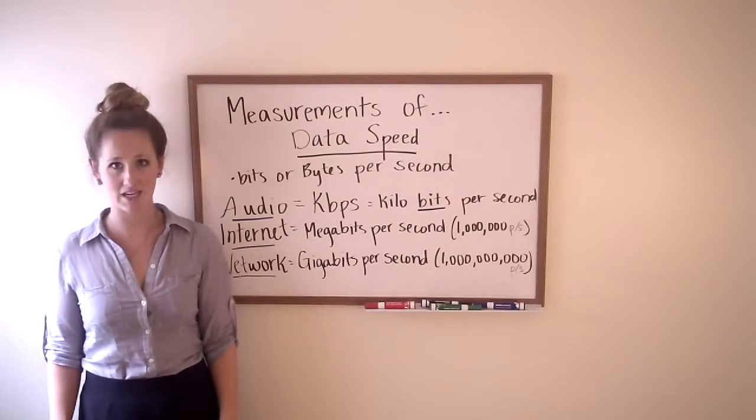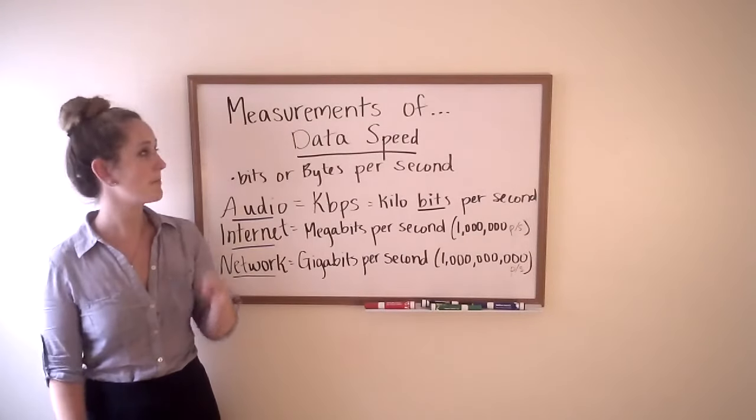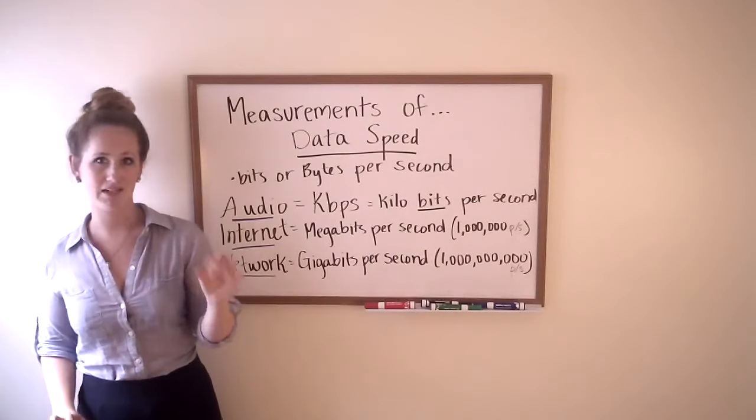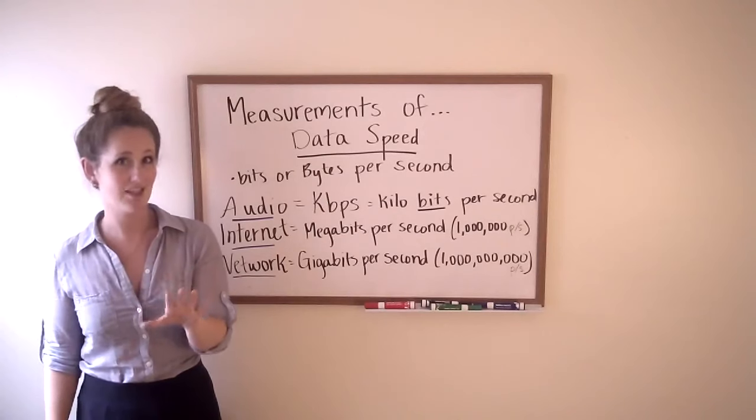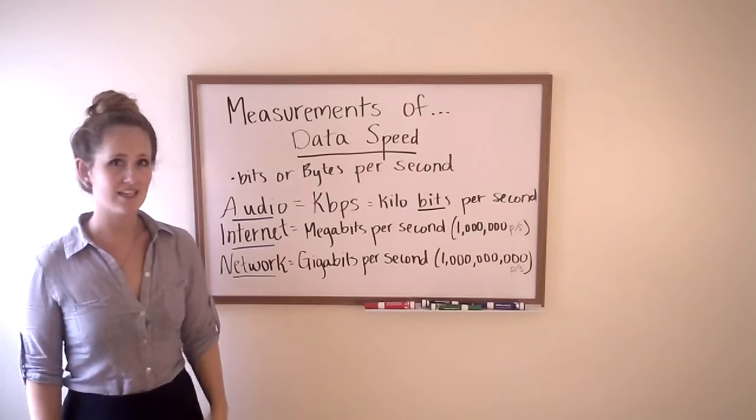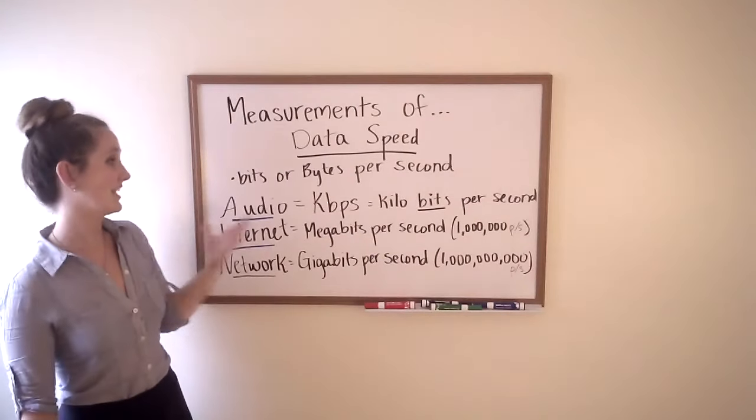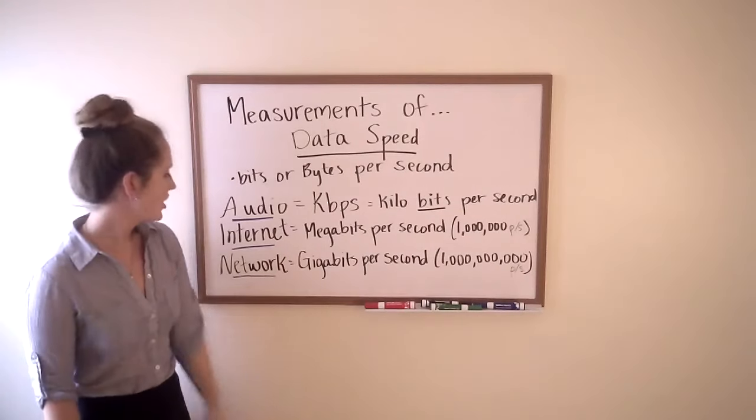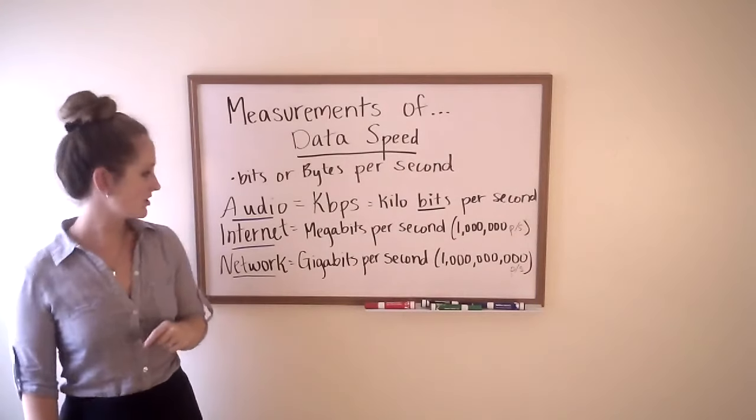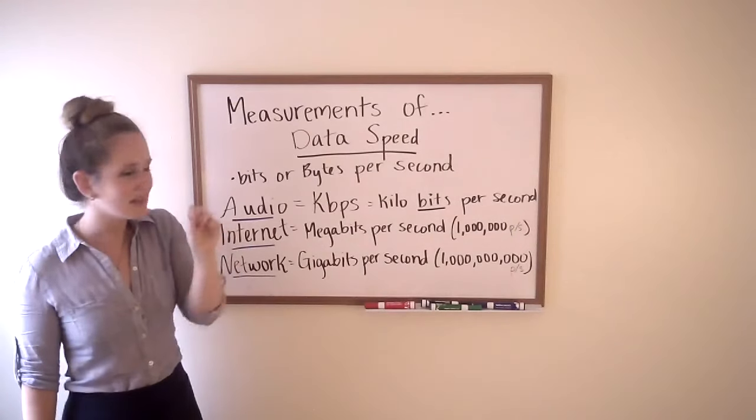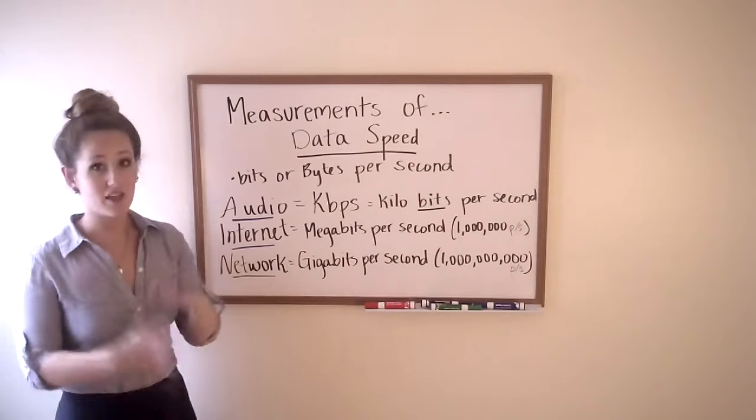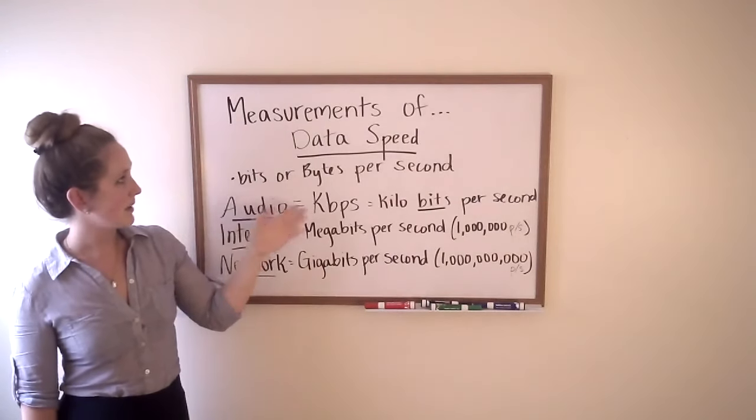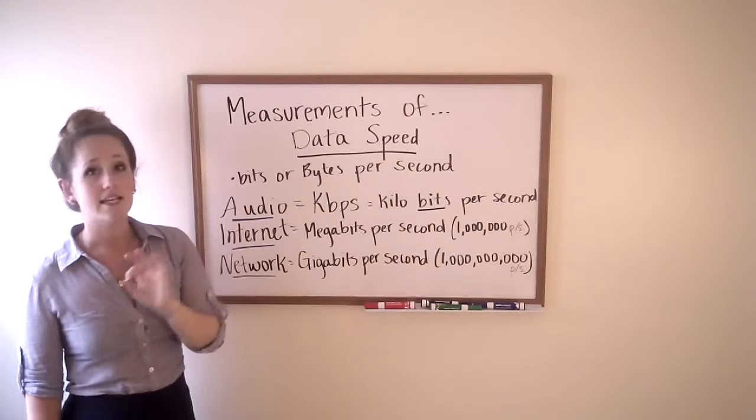Today we're going to be talking about data speed. Data speed, unlike data size, is usually measured in bits per second, whereas size is measured in bytes. Big difference being bytes is eight times bigger than bits at the very smallest level. Once we start talking exponentially, that makes a really big difference. How we talk about speed kind of depends on what we're talking about. When we talk about the speed of like an audio download, we talk about kilobits per second. Kilobits, not kilobytes, totally different number. Say we're talking about an internet speed, like the speed that your internet service provider gives you. They usually measure that in megabits per second, so one million bits per second. The network speed is something we talk about in gigabits per second, so a billion bits per second. Biggest distinction here, bits versus bytes. Data speed is generally measured in bits. Data size is measured in bytes.